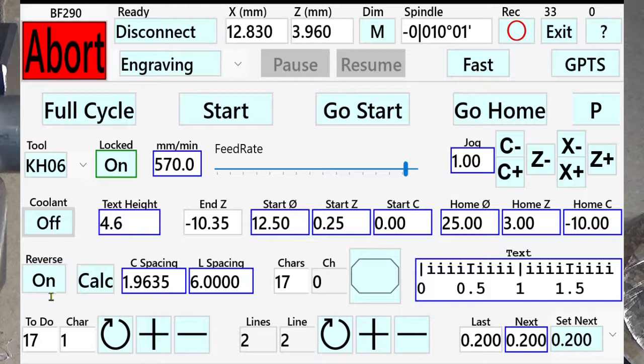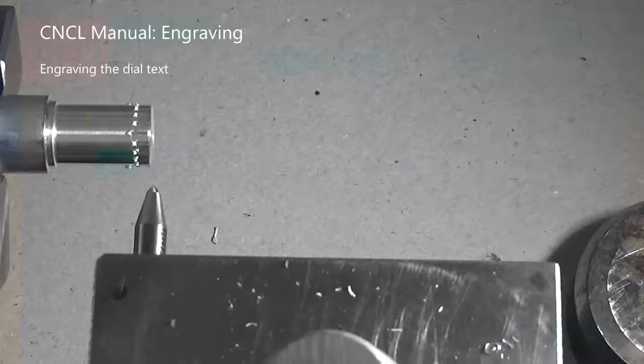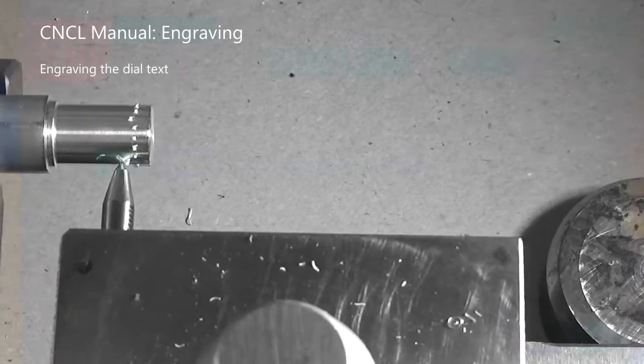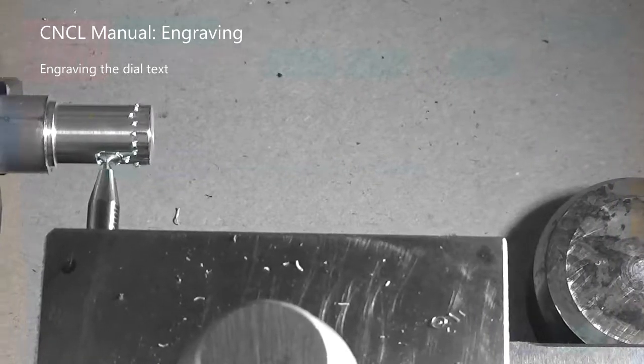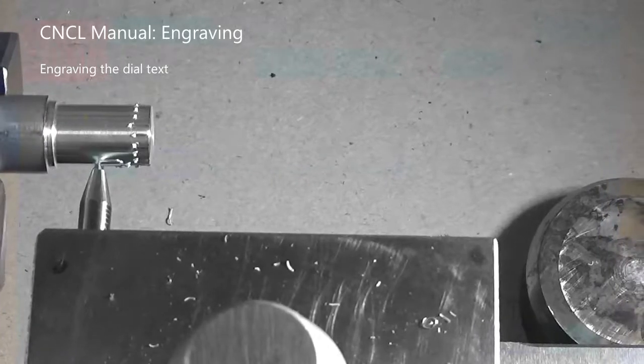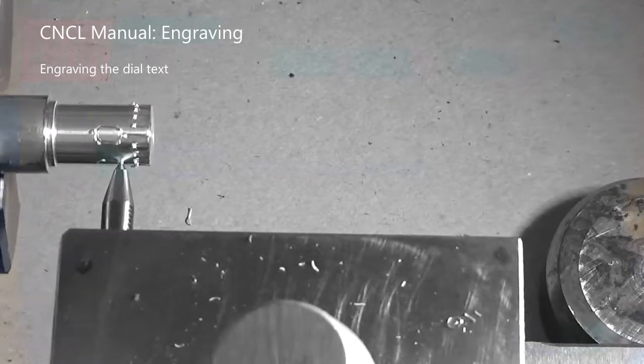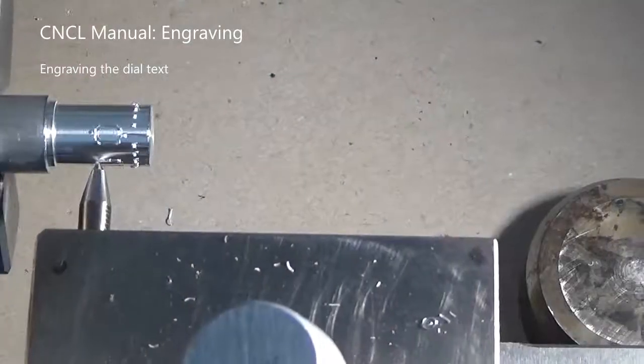We select reverse. That means that the character is engraved and at the end the tool path is reversed so it is engraved in two directions. This gives a better and even cutting depth when you use a grinded pin. Reverse full cycle.